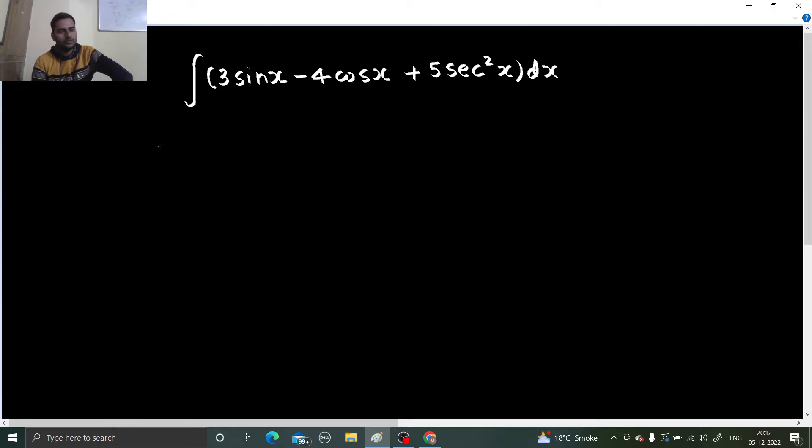So what about sin x? In our junior classes, we might have studied that the derivative of cos x is minus sin x. Okay, so if we integrate—if we go the reverse—integration of minus sin x should give you cos x plus a constant C, because derivative of cos x plus 2 is also minus sin x.